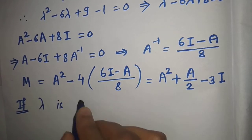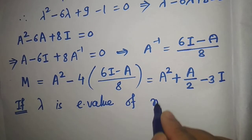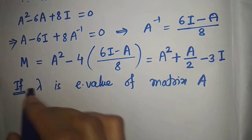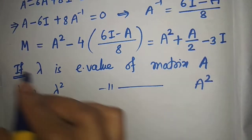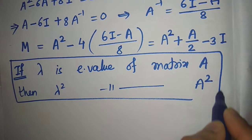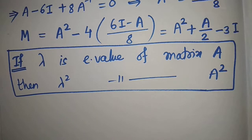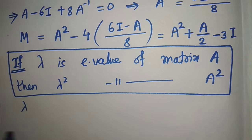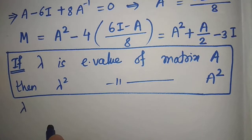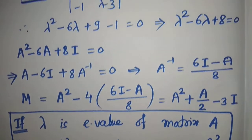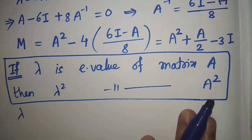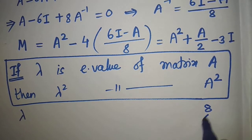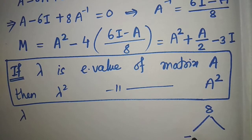An important theorem states: if λ is an eigenvalue of matrix A, then λ² is an eigenvalue of A², and more generally, p(λ) is an eigenvalue of p(A) for any polynomial p. We use this to find eigenvalues of M. First, find eigenvalues of A from the characteristic polynomial λ² - 6λ + 8 = 0: sum of roots is 6 and product is 8.